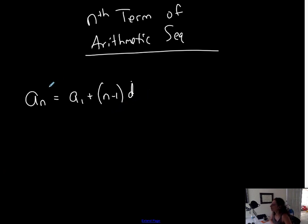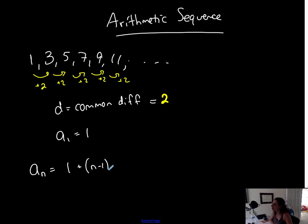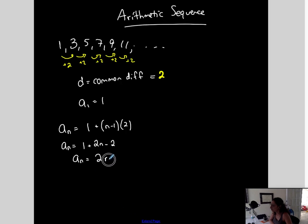So I need to identify a1, the first term, and the common difference to be able to write the nth term of an arithmetic sequence. In this case, the first term is 1 and the common difference is positive 2. So if I want to represent the nth term, I start at the first term and add n minus 1 times the common difference, which is 2. Simplifying: 1 plus 2 distributed gives 2n minus 2, so the nth term is 2n minus 1.